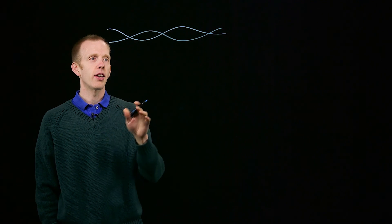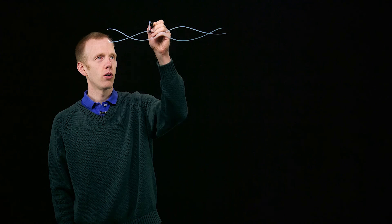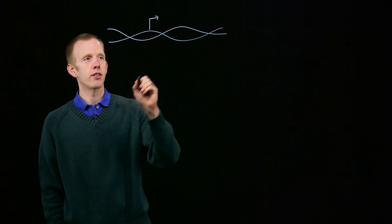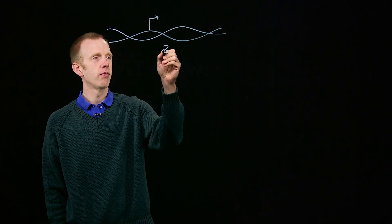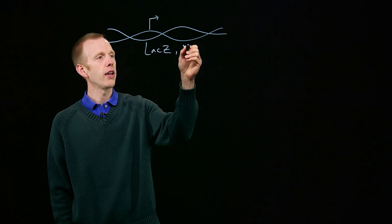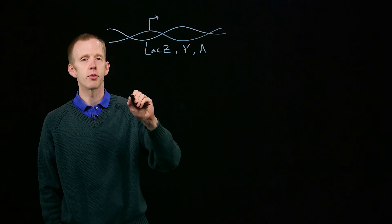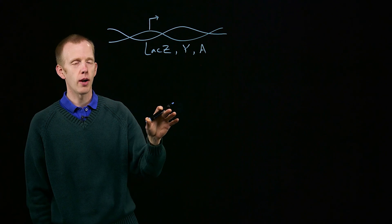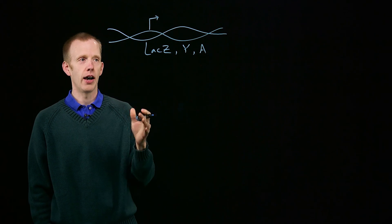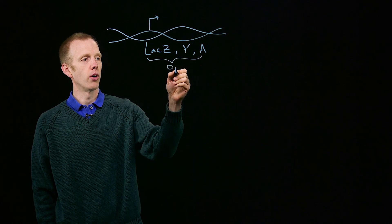The lac operon contains one transcription start site and three genes: lacZ, lacY, and lacA. These three genes are all transcribed together in one single RNA molecule, and that's what defines this as an operon.